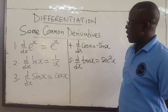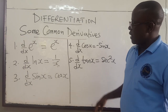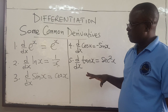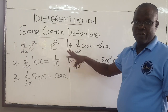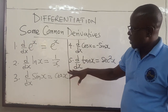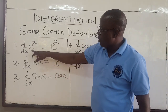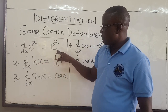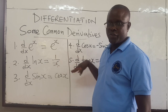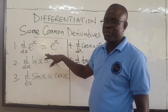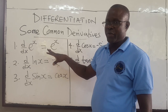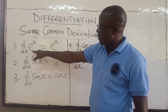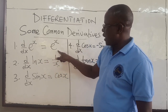We want to start by exposing you to some common derivatives. We are not going to prove this, but these are very important for you to know. The derivative of e to the x, the exponential function, is just e to the x. Most of these you can actually prove using first principles, but we are not proving them here. So the derivative of e to the x is e to the x.